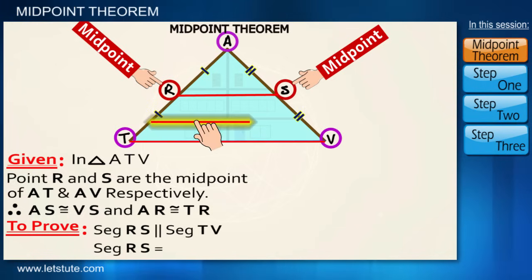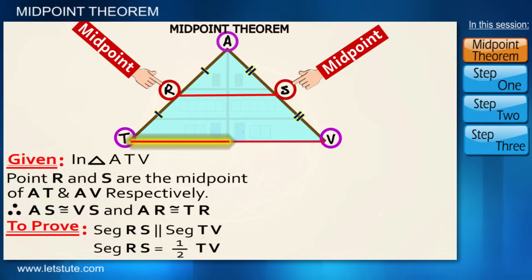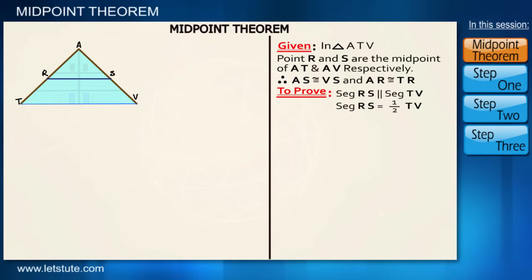So firstly we'll have to do a small construction. Let's construct the line segment VP which is parallel to RT and extend RS to join point P.